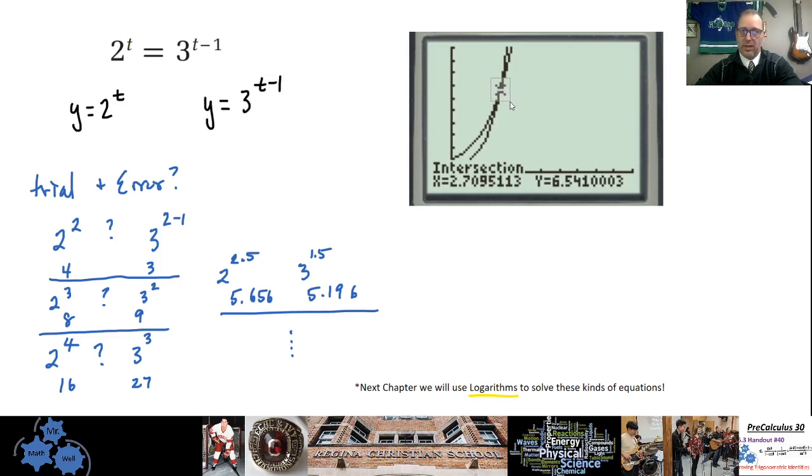We've done this all semester so far. So here, the solution to x is the x value on the intersection point. It's not the y value. The y value doesn't really matter here because this is what we're looking for, this right here. And so this is going to be the x value on your intersection point. So the value for x here is 2.709.